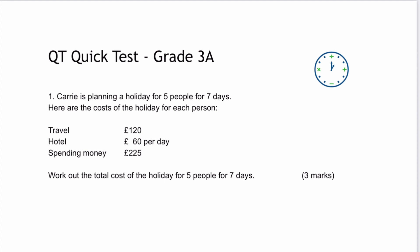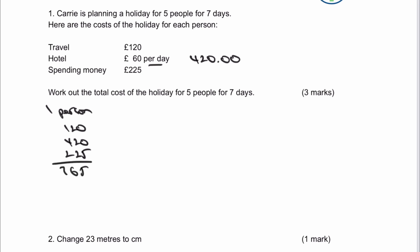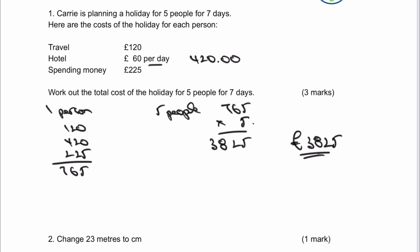It's going to give you some core skills to approach your GCSEs. The first question is a fairly typical type where somebody is planning a holiday. The cost is per person and we're looking at 5 days. Per day over a 7-day period is £420, so be careful. The total cost for one person is £120 plus £420 (£60 per day) plus £225 spending money, giving £765. For 5 people, £765 multiplied by 5 gives £3,825.